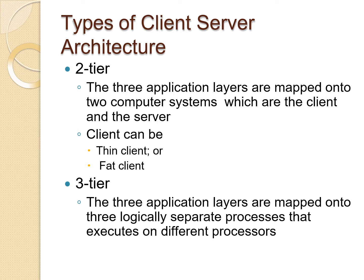In two-tier architecture, the three application layers are mapped onto two computer systems: the client and the server. The client can be a thin client or a fat client, and you can use these two architectures accordingly.